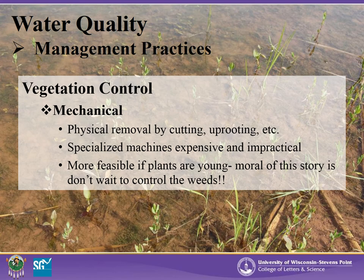Another method of vegetation control is mechanical — physically removing, cutting, or uprooting the vegetation from the pond. Although special machinery is available for mechanical control, these are expensive and generally impractical unless under special circumstances. In smaller ponds, hand tools can be used, but this requires greater labor. Mechanical control is most effective when plants are young and not fully established.